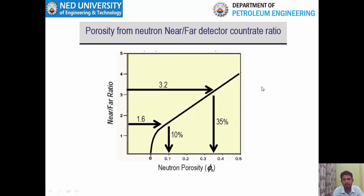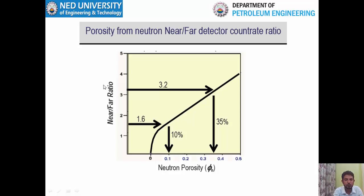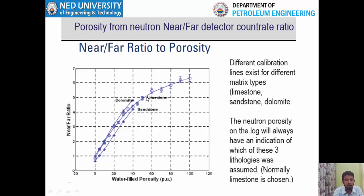Assalamualaikum. Welcome to all of you in this second video of week number 4. In the first video we saw that the near-to-far ratio as measured by the tool is converted into neutron porosity using a graph. On the y-axis you have near-to-far ratio, on the x-axis you have neutron porosity, and this is the matrix line. You assume a matrix and convert near-to-far ratio into porosity.